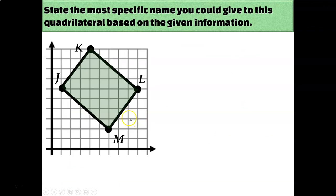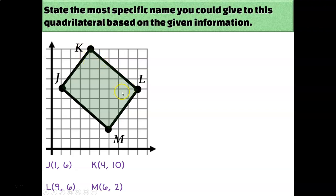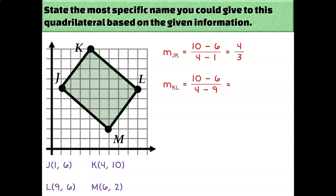Let's try another one. It kind of looks like a rectangle, so let's see if we can prove it. Write down your coordinates. In order to prove that it's a rectangle, I would need to show that consecutive sides have opposite reciprocal slopes, because that would mean each angle is a right angle. So let's calculate the slopes. JK has a slope of 4/3.